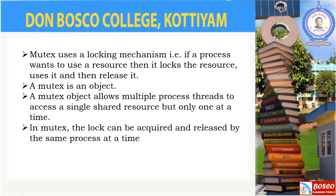Mutex lock uses the locking mechanism — if a process wants to use a resource, it will lock that resource, and after using it, it will release it. After that, other processes can use that resource. Mutex lock allows multiple process threads to access a single shared resource, providing permission to only one at a time. The lock can be acquired and released by the same process.